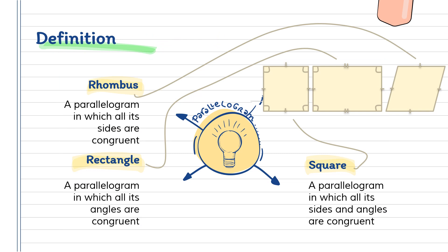Let's define our different parallelograms. We have a rhombus, a parallelogram in which all its sides are congruent. We also have our rectangle, which is a parallelogram in which all its angles are congruent. And lastly, we have our square, which is a parallelogram in which all its sides and angles are congruent. In our pictures, this is a square, this is our rectangle, and this is our rhombus.